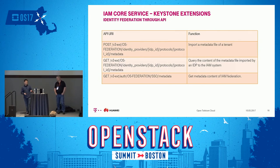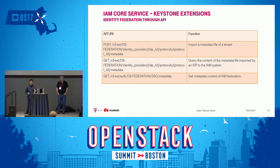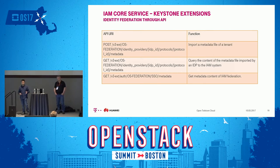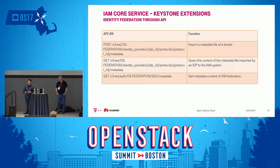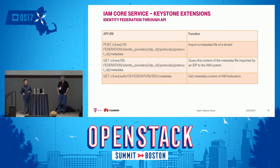We have some extension APIs to Keystone: one for importing a metadata file for a tenant, one for querying the content of a metadata file imported by an identity provider, and one for getting the metadata content of our service — so that it is convenient and easy for users to create an identity provider. This is all about our IAM core service.